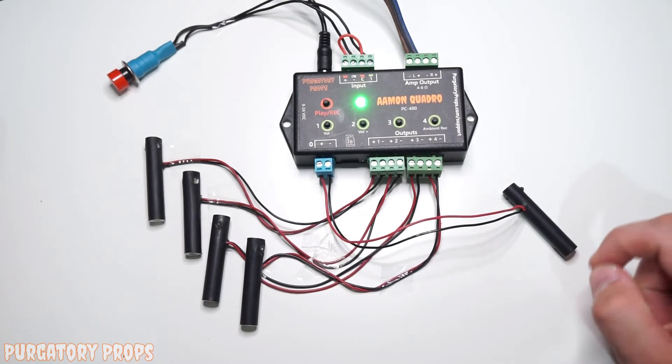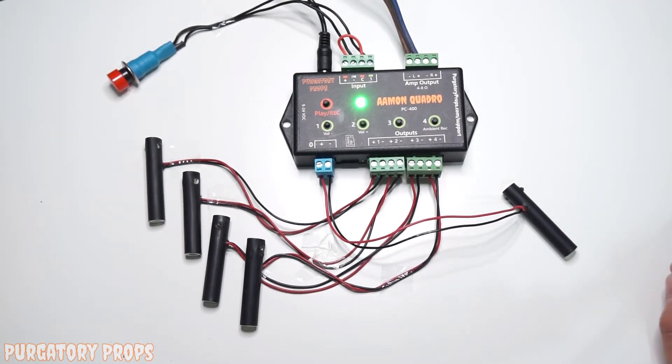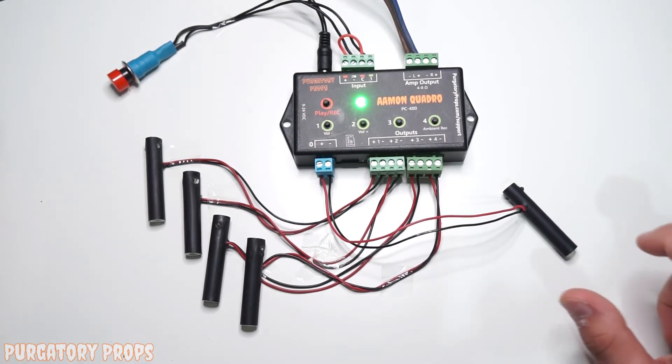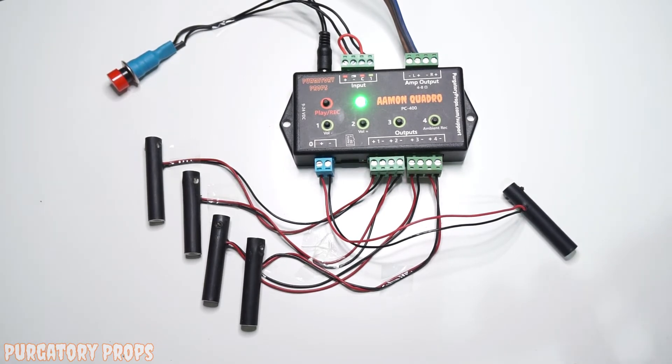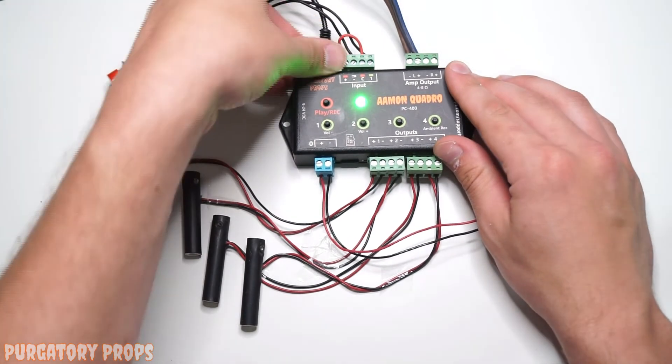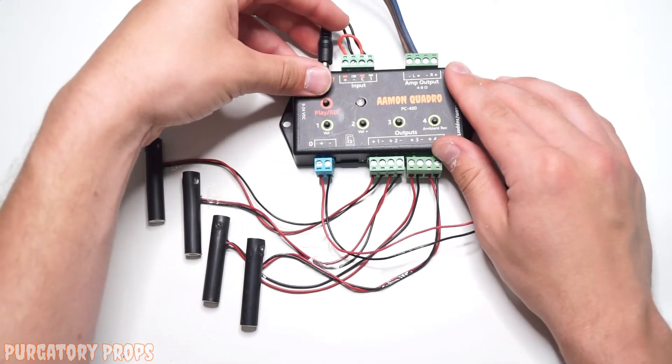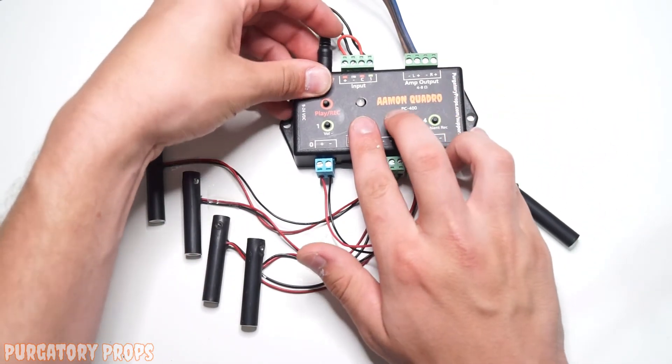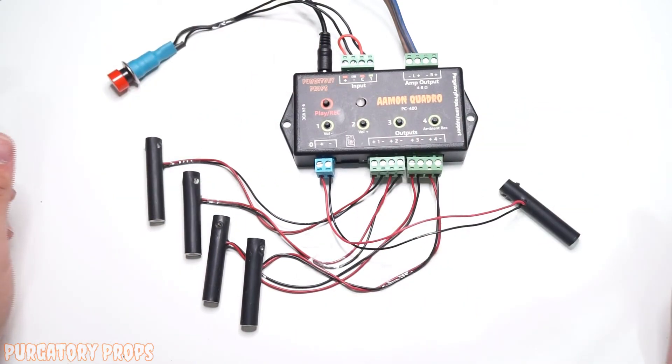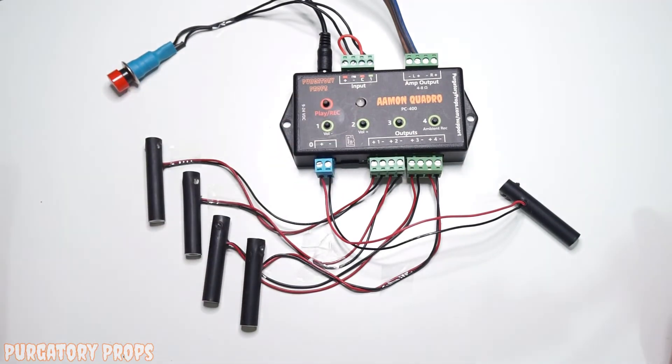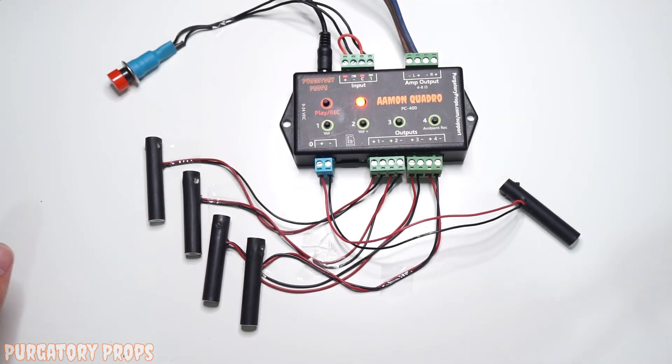The Amon Quadro also has pre and post delays. So with those, you can set a specified delay to happen before your animation starts or after your animation. So you can use that to add a gap between the ambient and the recorded animation. So to record those, unplug. When you plug back in, you're going to hold outputs 2 and 3 and play and record. When it turns red, let go. It is now recording the pre-delay. So when you reach the amount of time, you can go ahead and press play and record to save that.